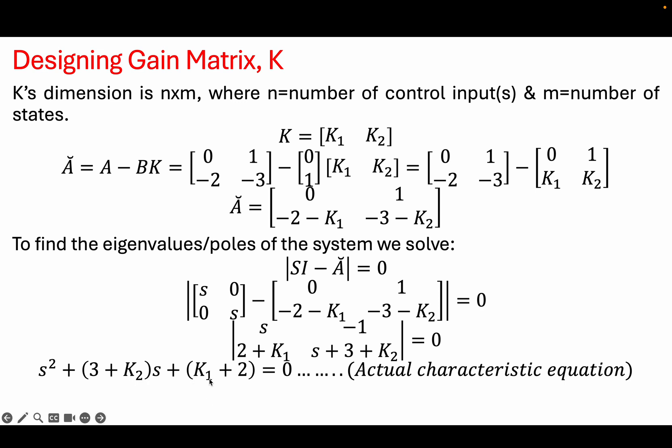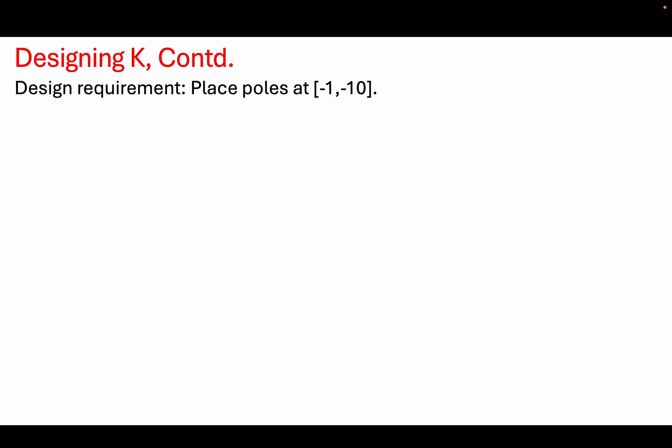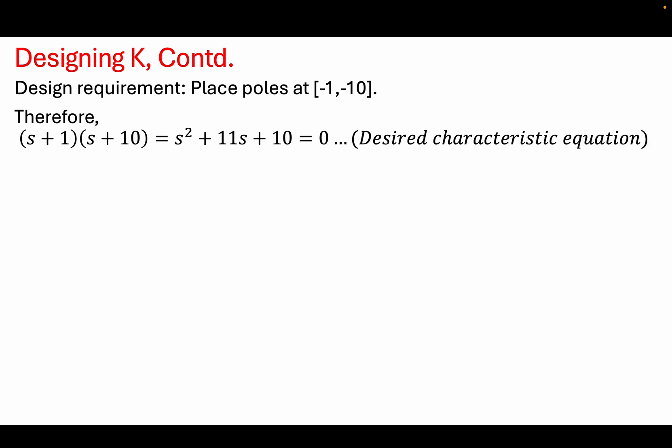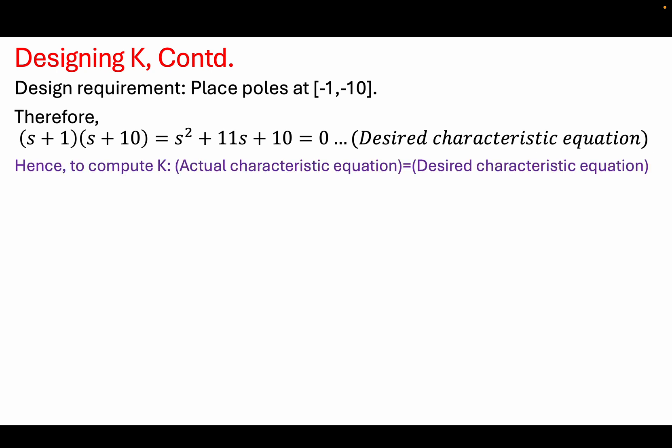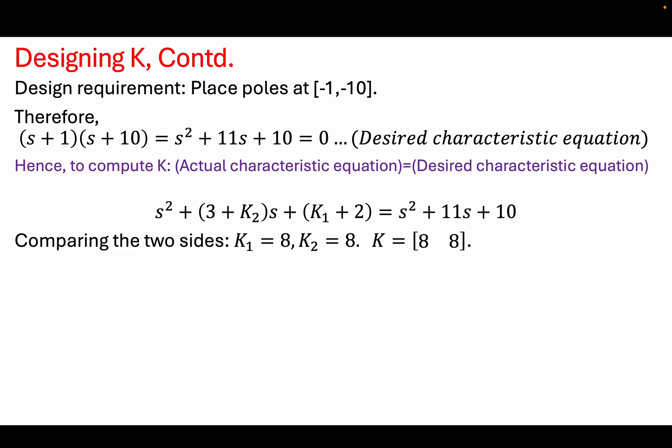We have the actual characteristic equation but we do not yet know K1 and K2 — the parameters we want to obtain. We know we want to place our closed loop poles at minus 1 and minus 10, so our desired characteristic equation is (s+1)(s+10), which expands to s² + 11s + 10. By comparing coefficients of the actual and desired characteristic equations we can solve for K1 and K2.